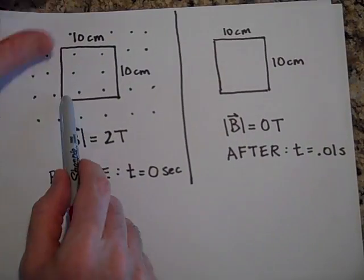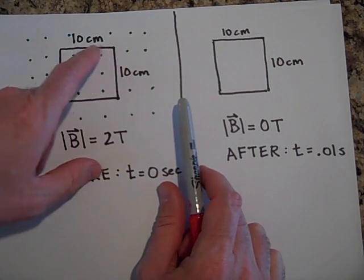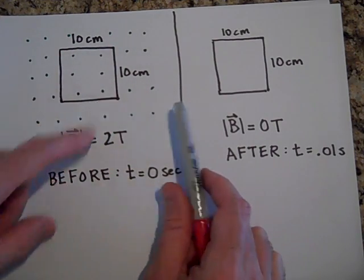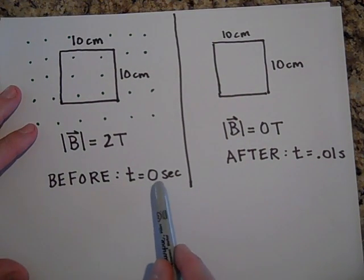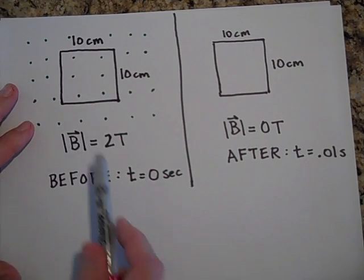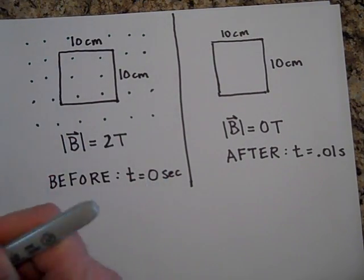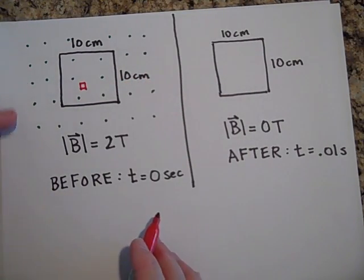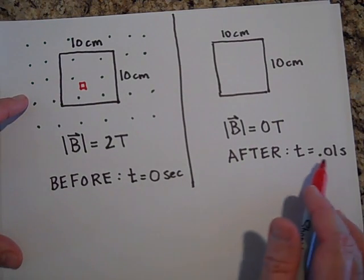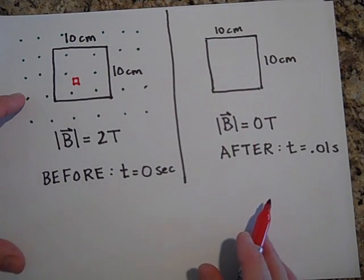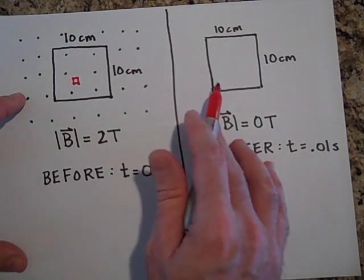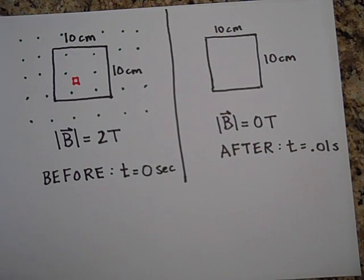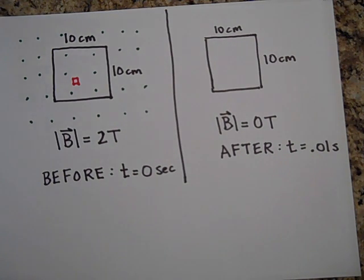Imagine we have a square hoop of copper wire — 10 cm on each side. The magnetic field inside is 2 teslas, pointing straight out of the paper at us, so B and dA are in the same direction. At time t = 0 it's 2 teslas; 0.01 seconds later there is no field in the wire. The rate at which that flux changes tells you how much EMF is induced, and if you induce EMF you'll induce a current.